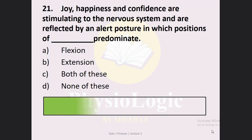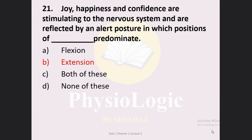Next MCQ: Joy, happiness, and confidence are stimulating to the nervous system and are reflected by an alert posture in which the positions of dash predominate. Option A: flexion. Option B: extension. Option C: both of these. Option D: none of these. The correct option is Option B: extension. The movement of extension, brought about by the anti-gravity muscles, predominates when the nervous system is stimulated by feelings like joy, happiness, and confidence.